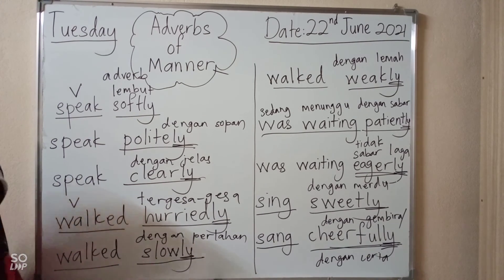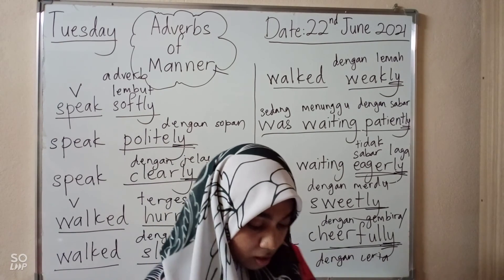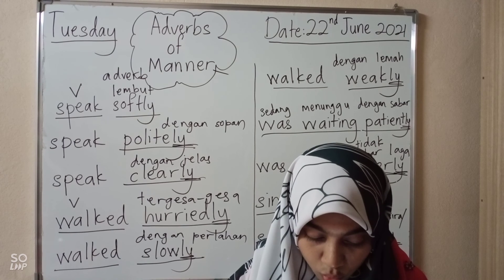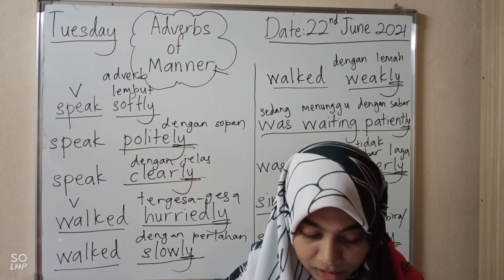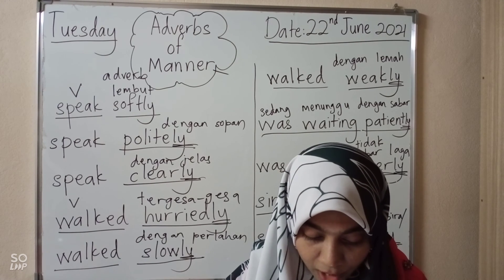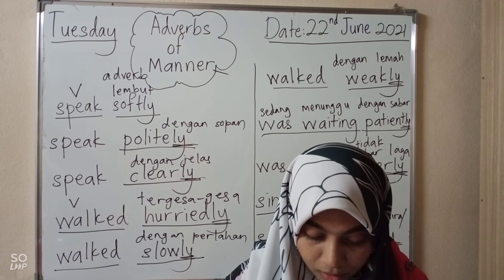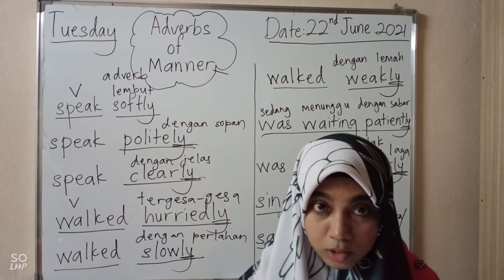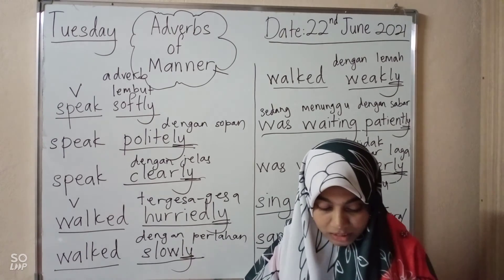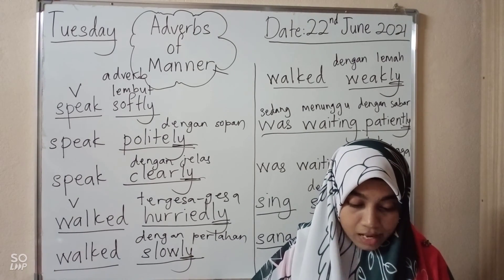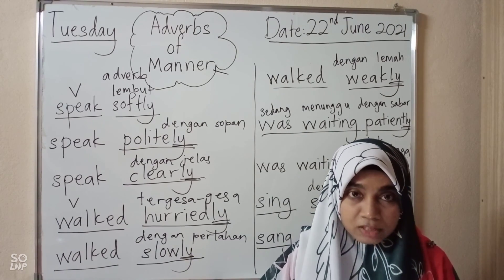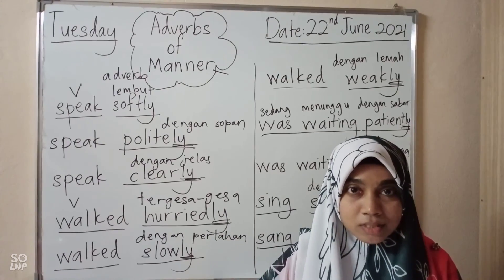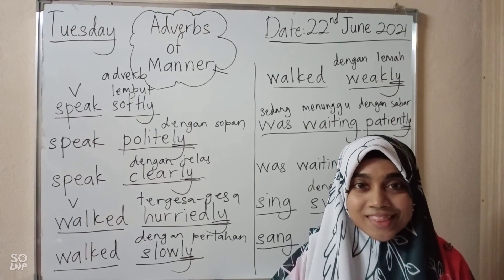Afterwards, you may carry out the activities from page 172 until 174 — there are 3 pages there with 20 multiple choice questions — 20 soalan ABC berbilang pilihan. Click the Google form and choose the correct answer. All the best, thank you.